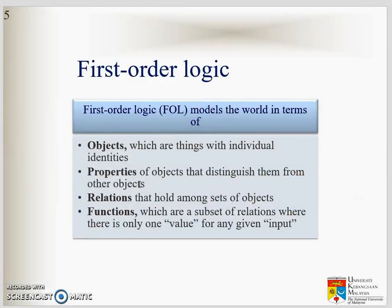First order logic tries to model the world in terms of objects, properties, relations and functions. They want to represent by dividing the world or things around us into objects, properties of the object, relationship between the objects as well as the function, where there is only one value for any given input.